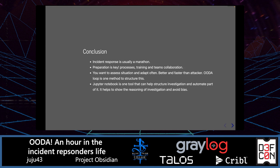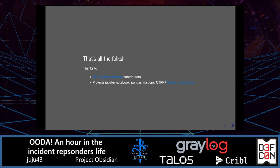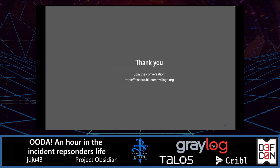Last: make it easier for you and your team. Structure and automate the work so decisions can be taken better and faster. Jupyter Notebook is one way to structure and automate things — it helps document and show the reasoning of an investigation and avoid bias. This is the end of this walkthrough. Thanks a lot for attending. I also want to thank all contributors to Blue Team Village Project Obsidian and to Project Jupyter Notebook, Pandas, MysticPy, and OpenSearch Research. Enjoy Blue Team Village and DEF CON, be it virtually or in real life. Thanks, and join the conversation on our Discord.